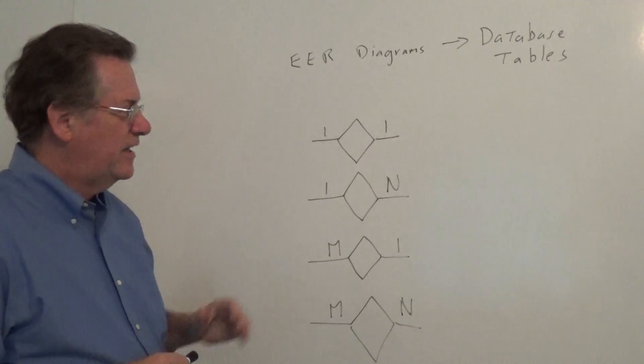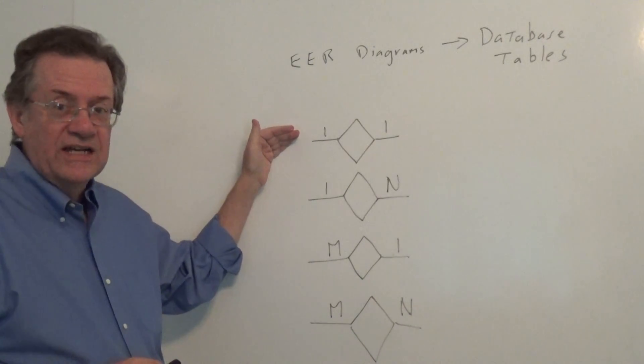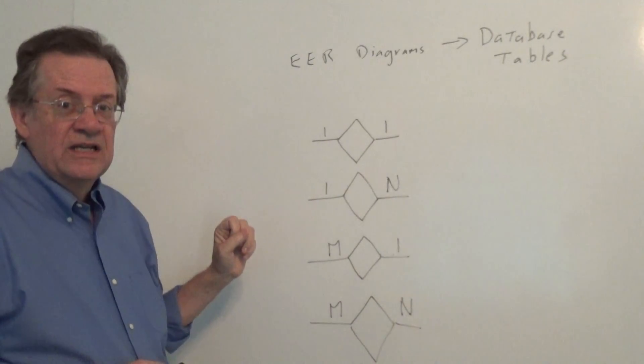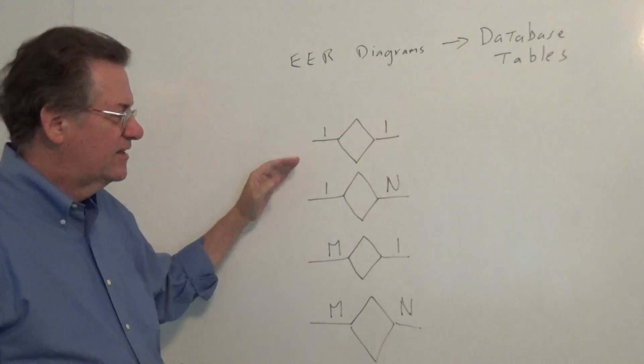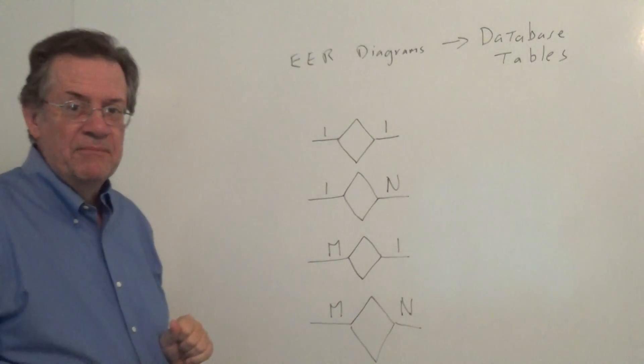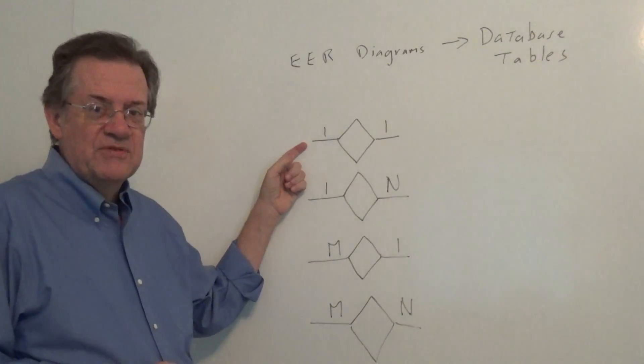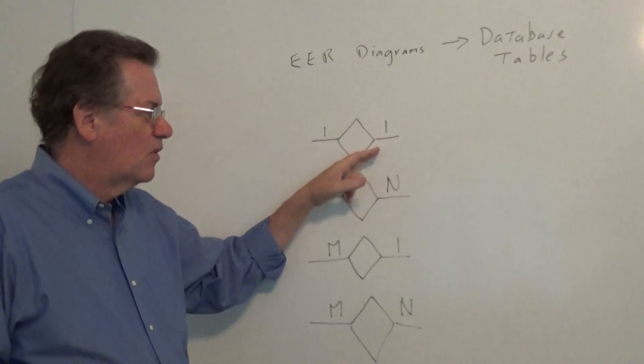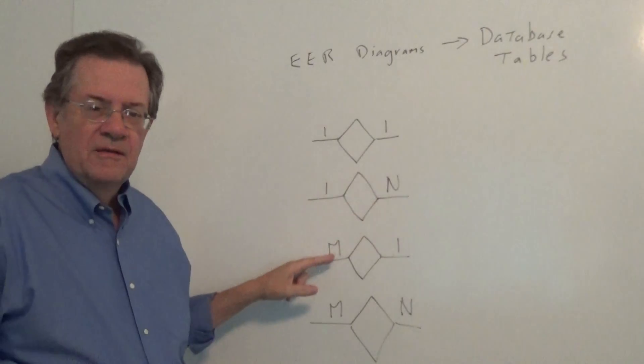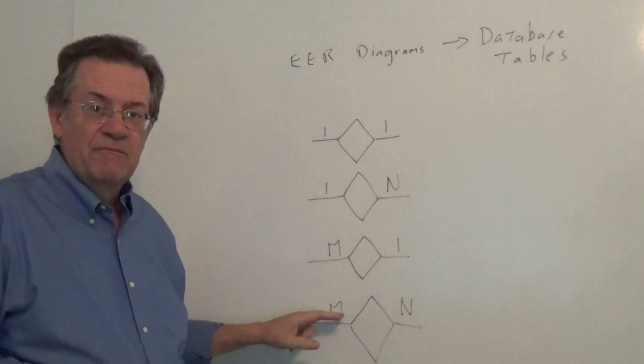and what I want to talk about in this video is how we go about mapping EER diagrams to database tables. And what I want to show you here is, when we have the cardinality between two entities, how do we take the cardinality and map it to a database table? And I'm listing four types of cardinality: one-to-one, one-to-many, many-to-one, and many-to-many.